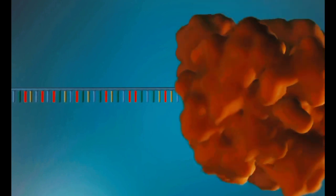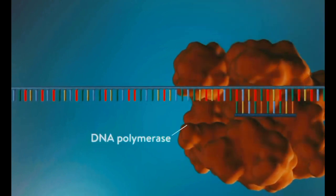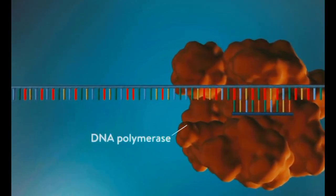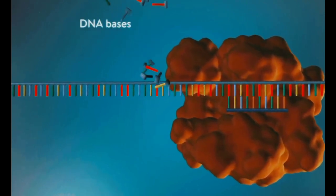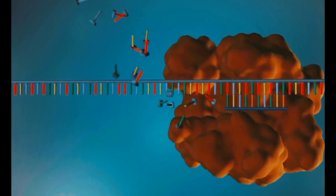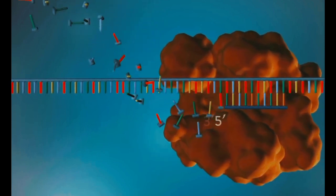An enzyme called DNA polymerase binds to the primer and will make the new strand of DNA. DNA polymerase can only add DNA bases in one direction, from the 5' end to the 3' end.